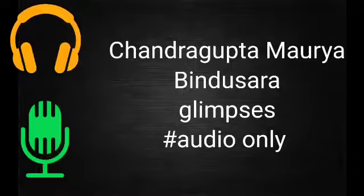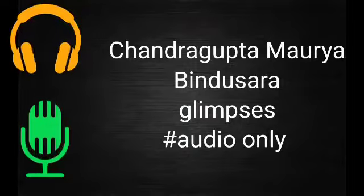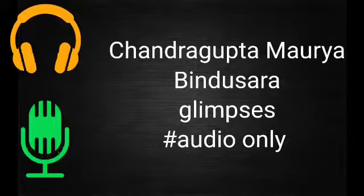While expanding his empire towards the northwest, Chandragupta faced Seleucus Nicator, who at the time was trying to expand his empire towards the east. Chandragupta Maurya and Seleucus Nicator fought, and Seleucus lost the battle. The two rulers reconciled with a peace treaty in 305 BCE, in which Chandragupta acquired Baluchistan, eastern Afghanistan, and the region to the west of the Indus. In return, Chandragupta sent 500 war elephants and also married Seleucus Nicator's daughter. Megasthenes was a Greek ambassador at Chandragupta's court.